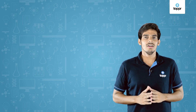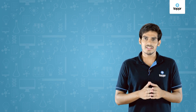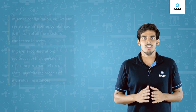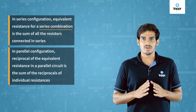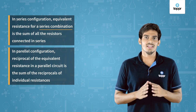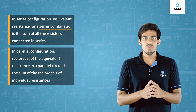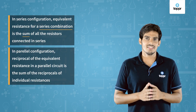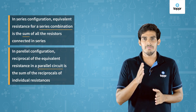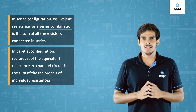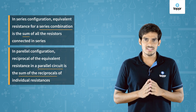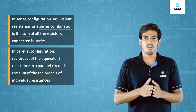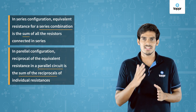So we have calculated the equivalent resistance for both configurations. For a series configuration, the equivalent resistance equals the sum of all resistances connected in series. In a parallel configuration, the reciprocal of the equivalent resistance equals the sum of the reciprocals of the individual resistances.